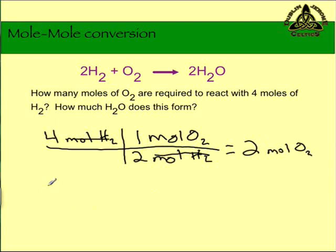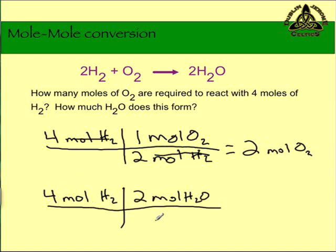We also want to figure out how many moles of H2O this forms. We're gonna start the same way, 4 moles of H2. We are going to convert to moles of H2O, and the coefficient for that is 2. On the bottom we need moles of H2 to cancel out, and the coefficient for that is 2. Moles of H2 cancel out. We've got 4 times 2, which is 8, and we divide that by 2, which is 4. So 4 moles of H2O should form when this reaction is taking place.